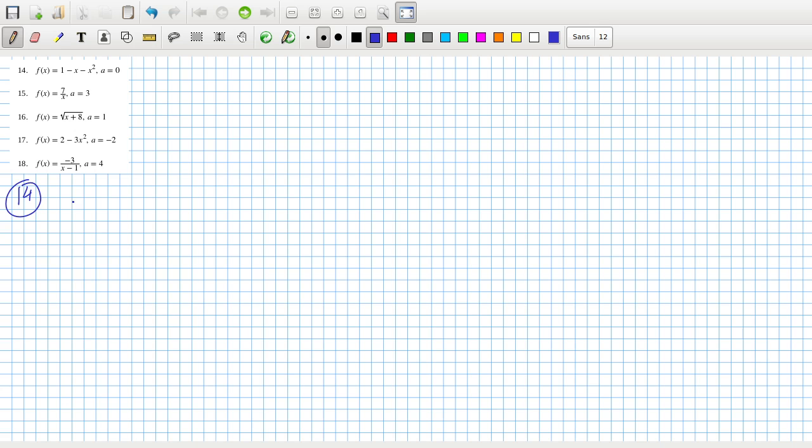Okay, so we want to calculate the limit as h tends to 0. F of, well, that's handy actually because f of a plus h would just be 0 plus h. So it would just be 1 minus h minus h squared and then minus f of 0, which is 1, all over h. So they cancel and you're going to be left with minus 1. Yeah, that seems right to me.